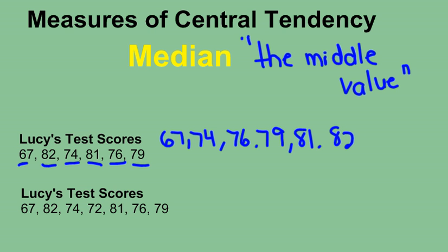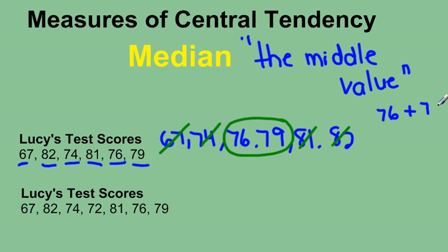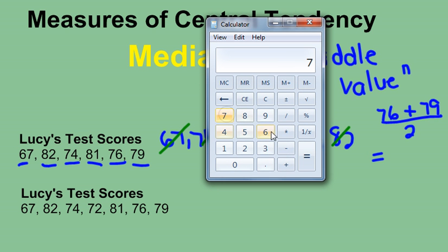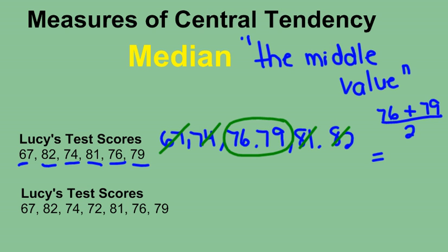Now I'm looking for the middle value. When I start counting them off, I find two middle values. When you have two, you need to take the average — add them together and divide by how many there are, which is two. So 76 plus 79, divided by 2, gives me 77.5. So the median of those marks is 77.5.